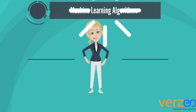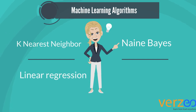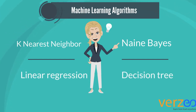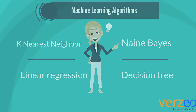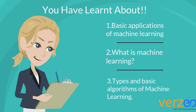Now let's take a quick look into the four basic algorithms. They are: k-nearest neighbors, linear regression, decision tree, and Naive Bayes. We will learn in detail later. In this video, you have learnt about life without machine learning, what is machine learning, and the different types of machine learning.